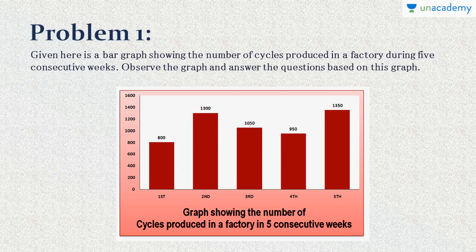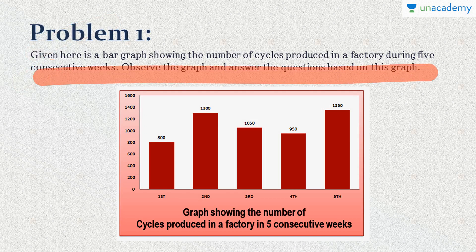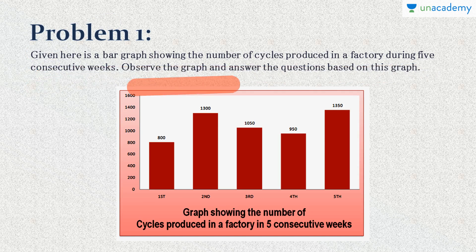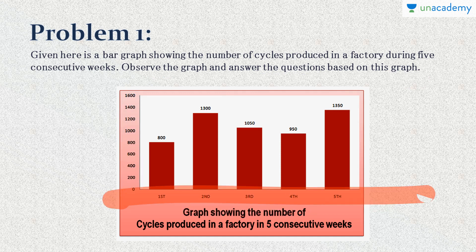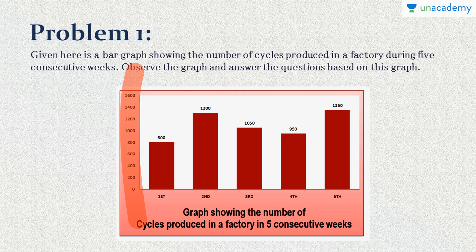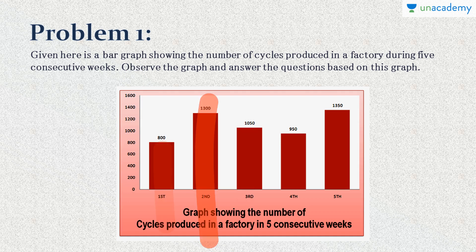Problem 1: We are going to see a few very simple problems just to warm up. Given here is a bar graph showing the number of cycles produced in a factory during five consecutive weeks. The x-axis has the five weeks marked and the y-axis has the number of cycles produced. Week 1: 800 cycles, Week 2: 1300, Week 3: 1050, Week 4: 950, Week 5: 1350.